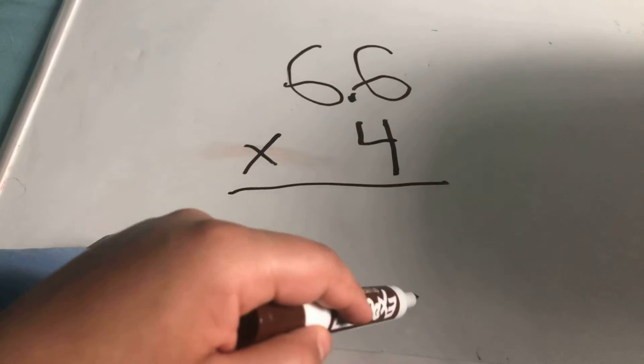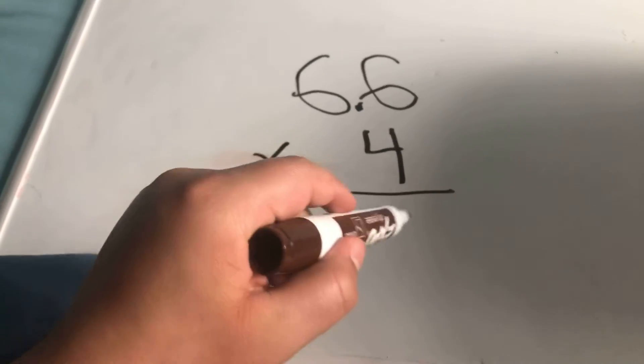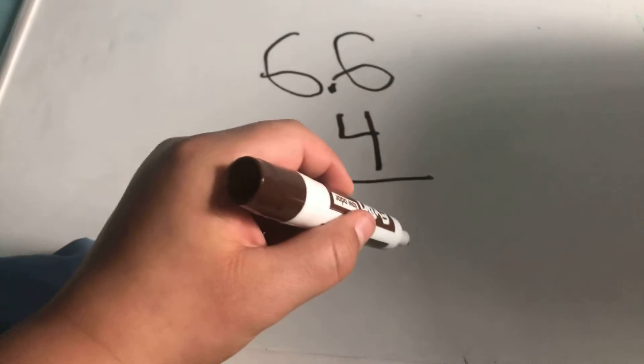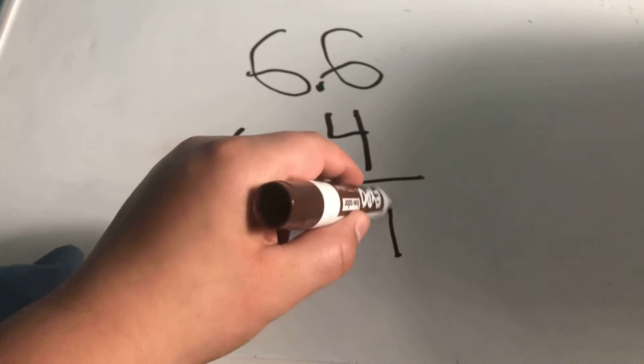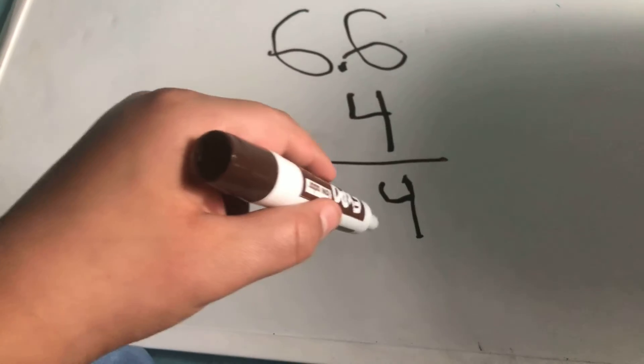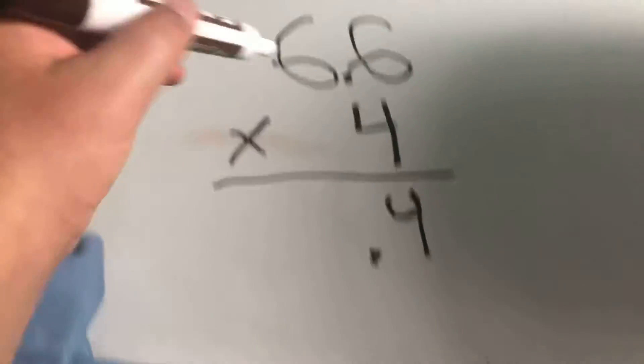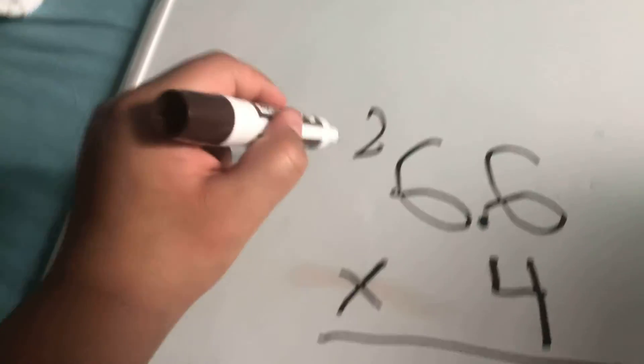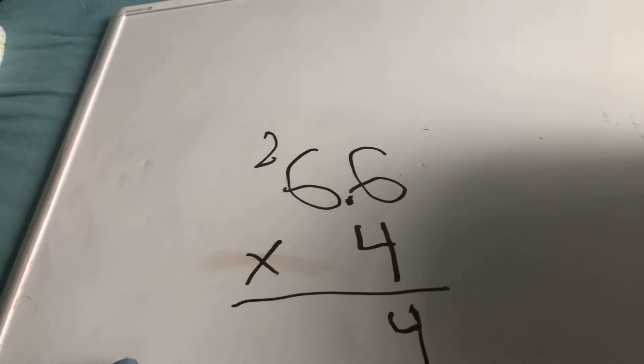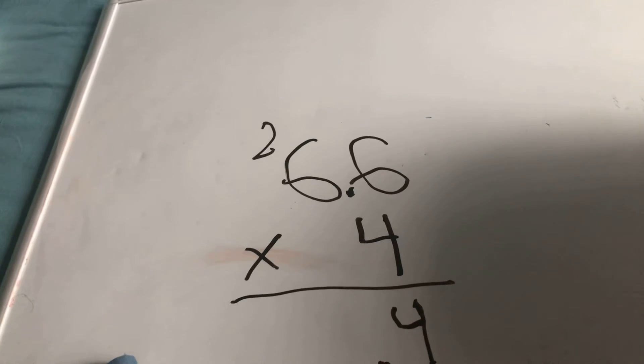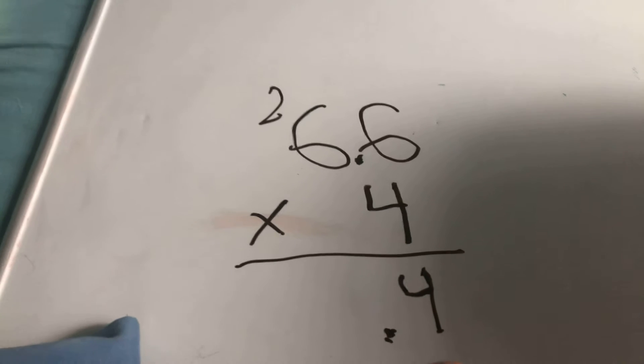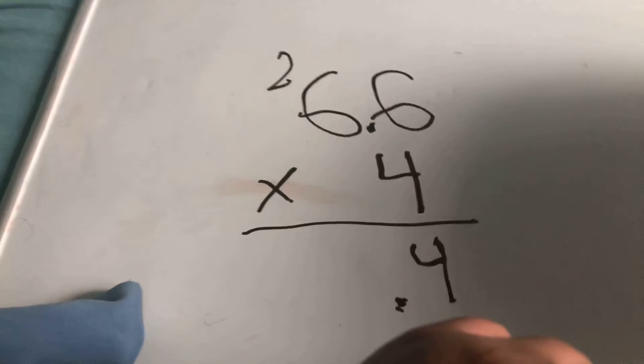Four times six is 24, we put the four, we put the point down here, and we carry the two. So four times six, plus two.